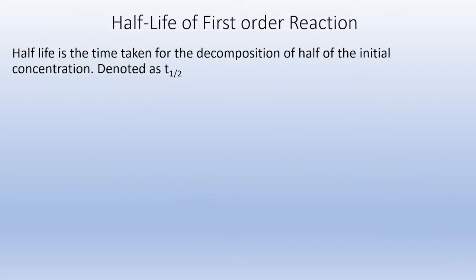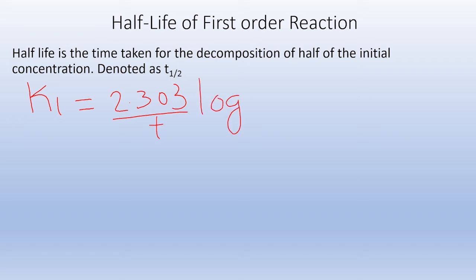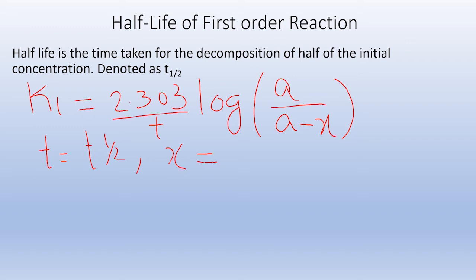Next, let us see the half-life of a first order reaction. Half-life is the time taken for the decomposition of half of the initial concentration. It is denoted as t½. For example, if you have 10 grams of substance, the half-life is how long it takes to decompose 5 grams. To calculate the half-life of a first order reaction, we take the rate constant equation: k1 equals (2.303/t) log[A/(A minus x)]. When t equals t½, the amount of product formed x equals A/2.